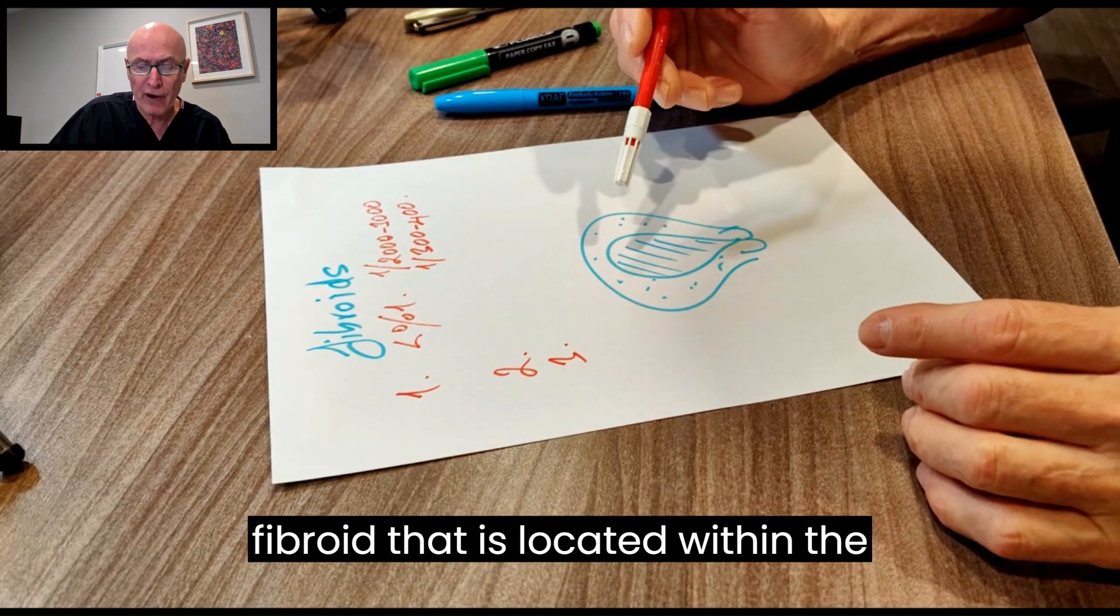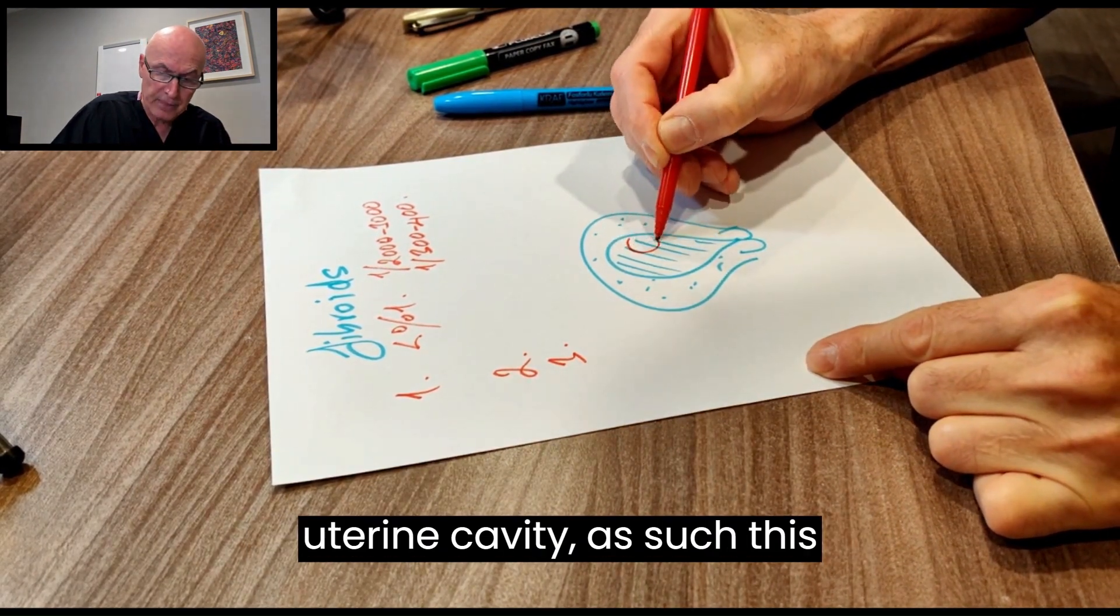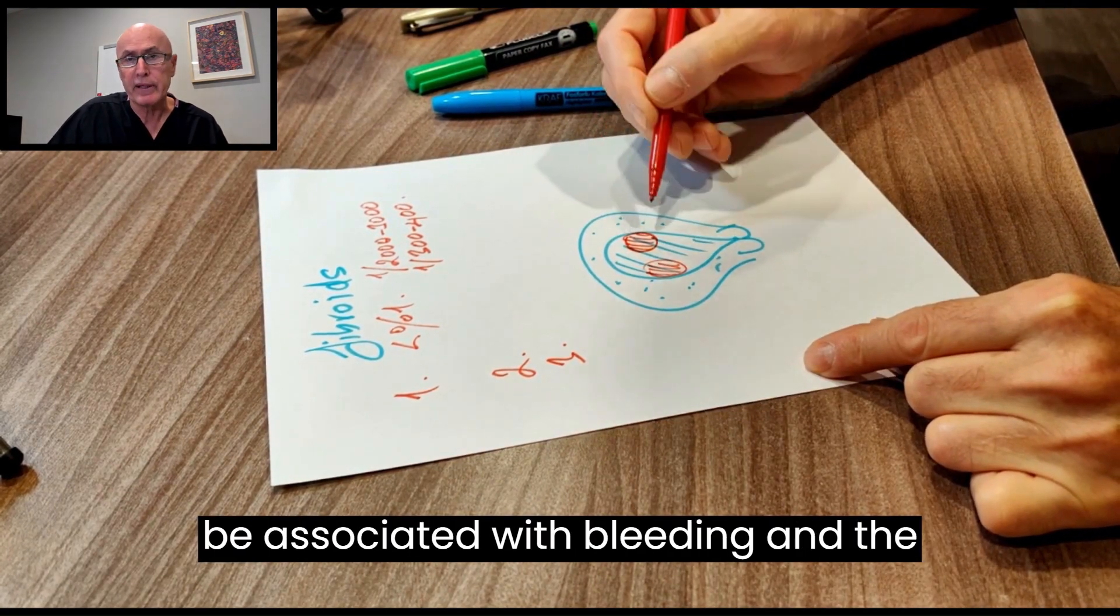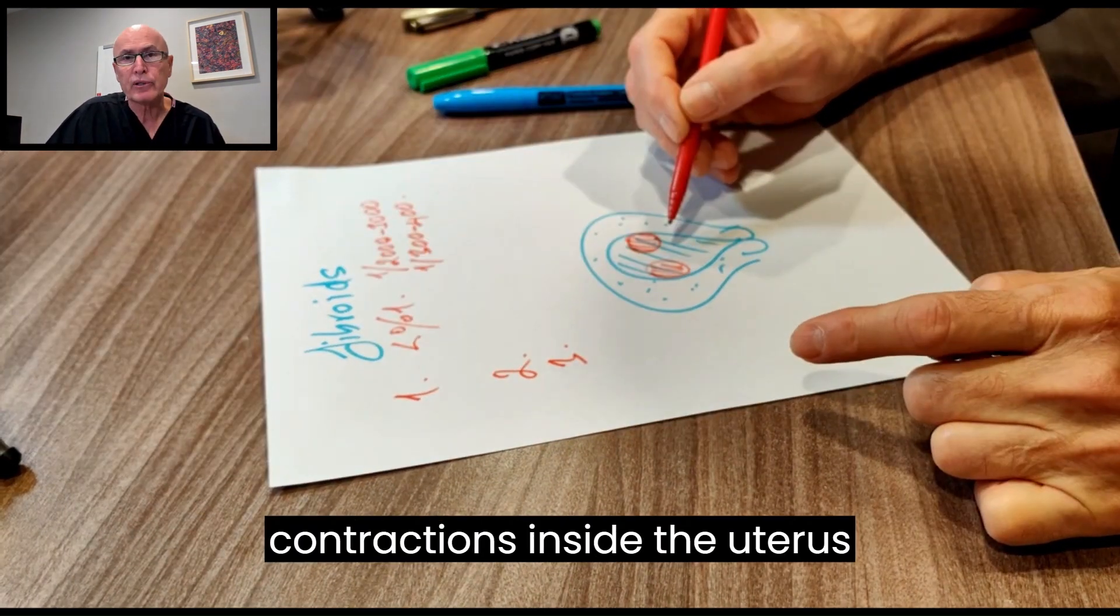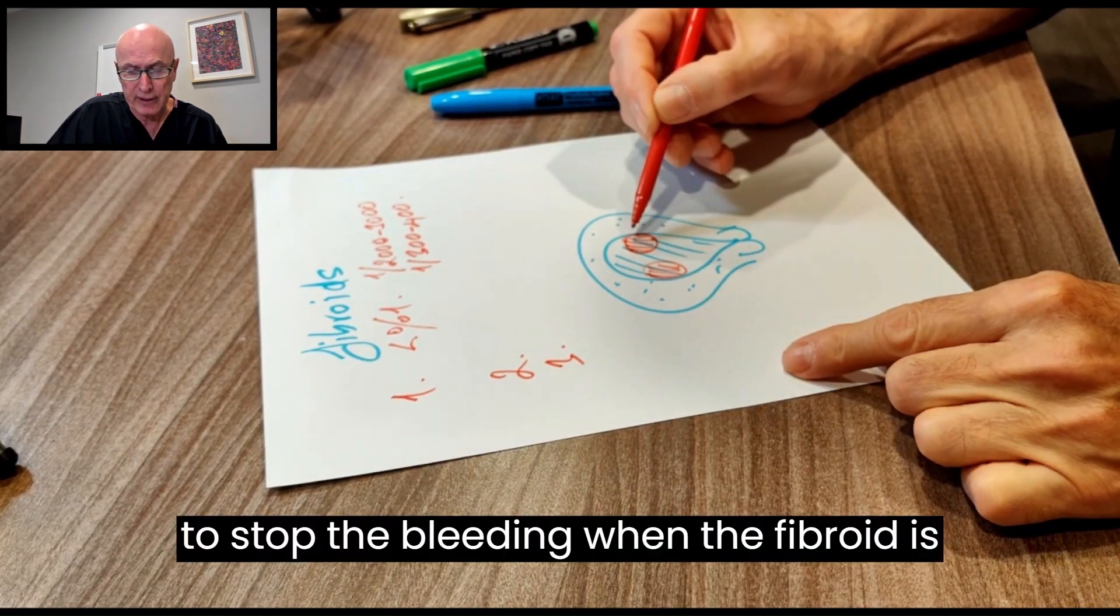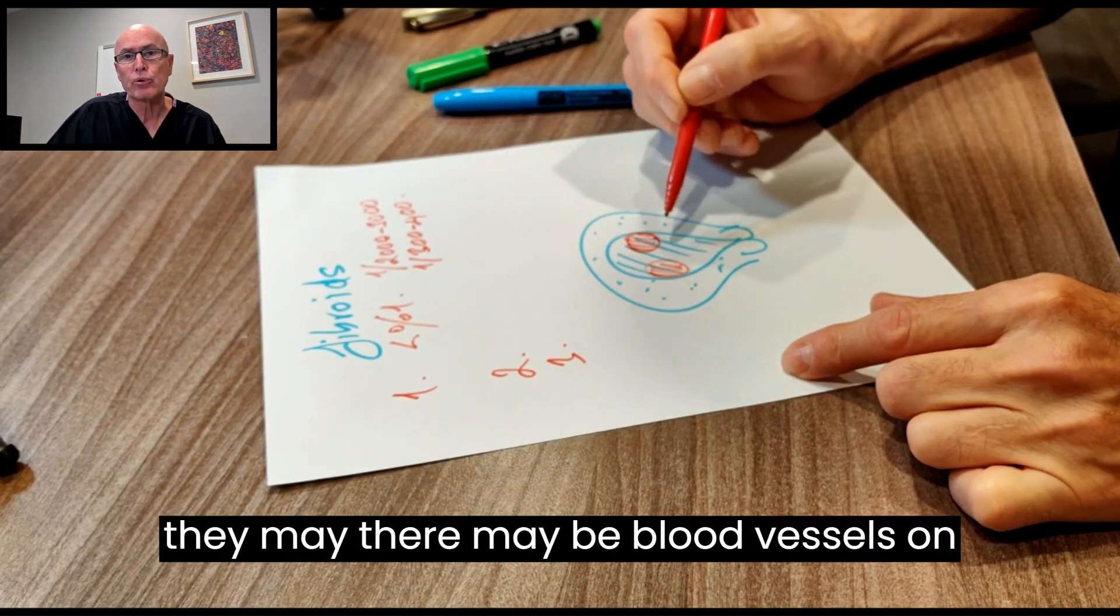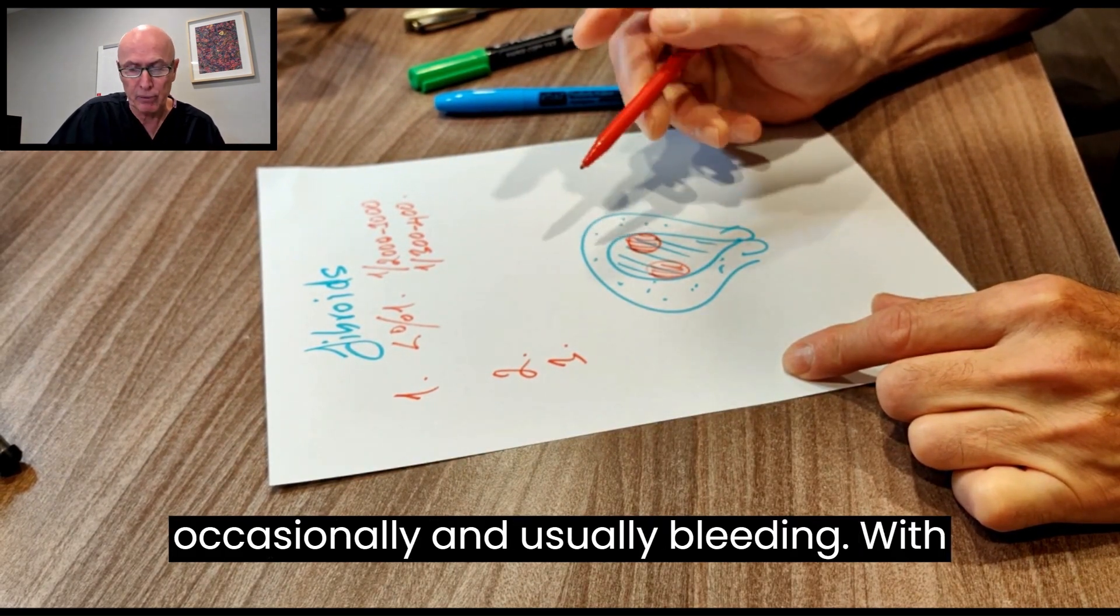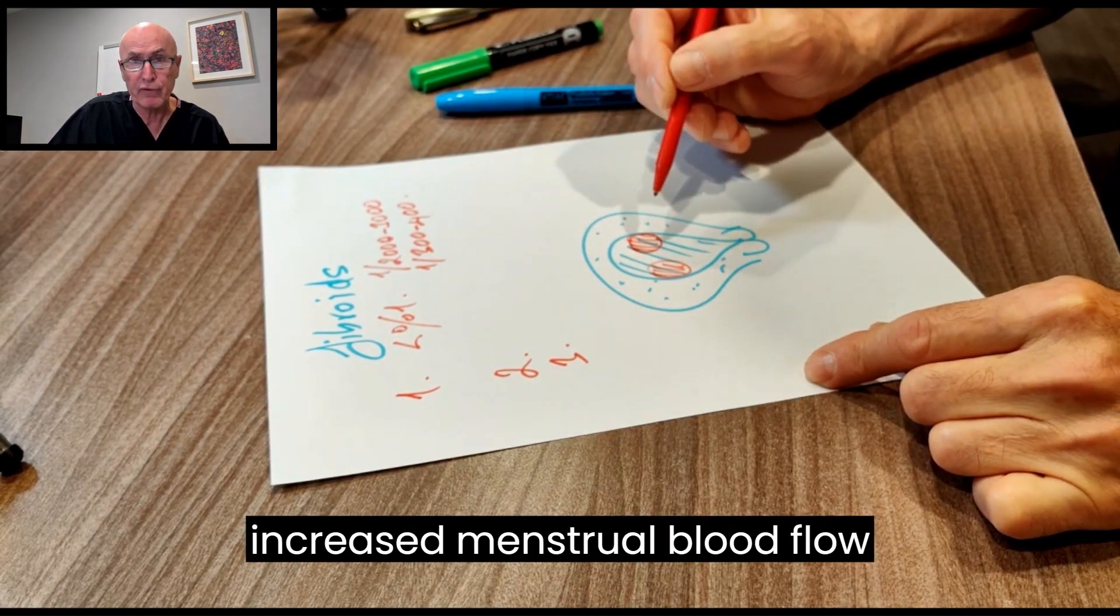Any fibroid located within the uterine cavity, which we call a submucous fibroid, may be associated with bleeding. The reasons for bleeding may be several: there's not enough contractions inside the uterus to stop bleeding when the fibroid is within the cavity, or there may be blood vessels on top of the fibroid which may bleed occasionally. Usually bleeding with fibroids is associated with increased menstrual blood flow.